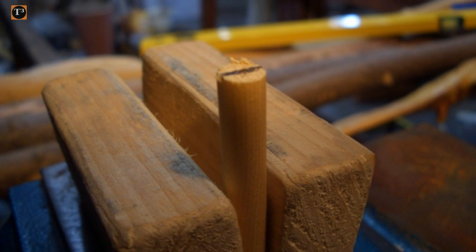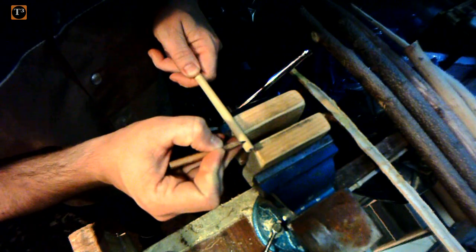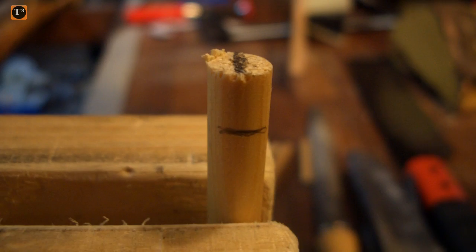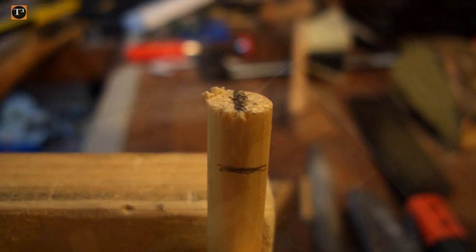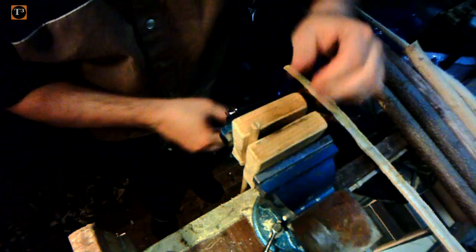Start by drawing a line perpendicular to the annual rings. Afterwards, mark how deep you want your nock to be. Mine is about one centimeter. Fasten the arrow shaft, for example in a vise, and use soft wood like pine to protect it from damage.